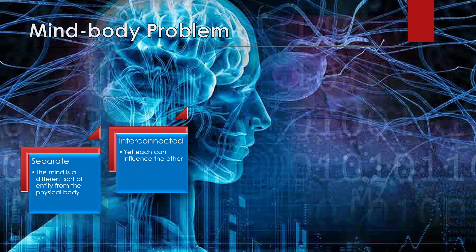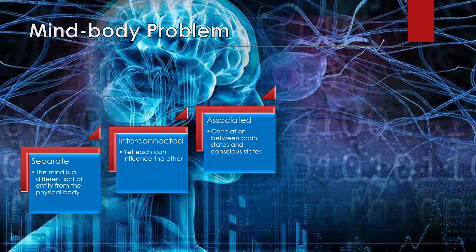Biology influences how your mind — or whatever you're thinking about — functions, and then what you're thinking about can influence the way your body's functioning. They're associated because there's a correlation between what your brain is doing and your conscious experience of that, or even your unconscious experience — because sometimes what your brain is doing is going into certain brain waves, and that's what we call sleep. So certainly there's an association between our mind and our body.